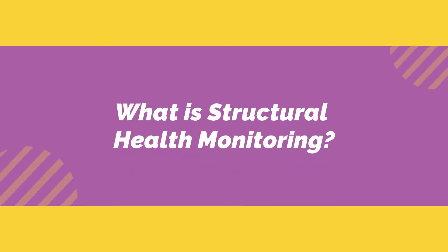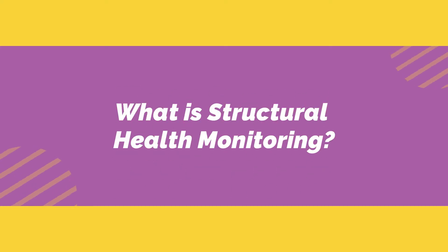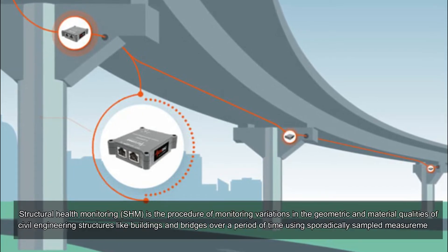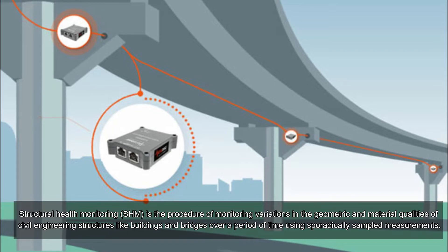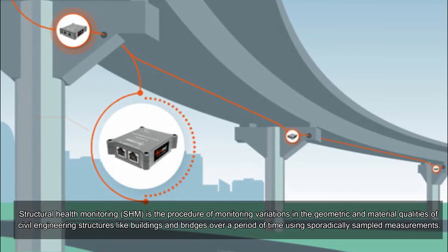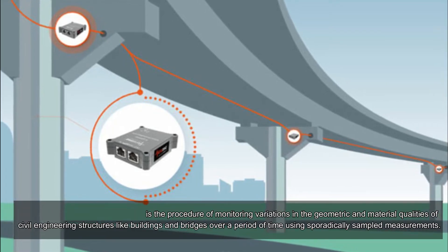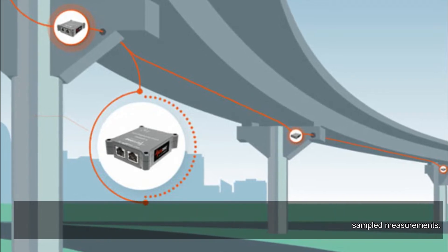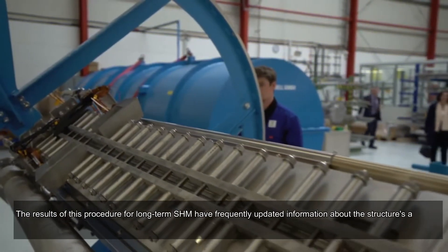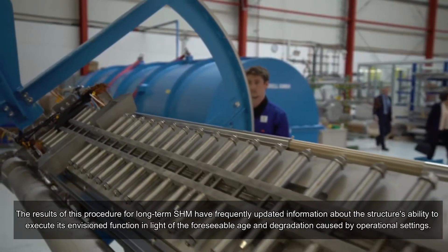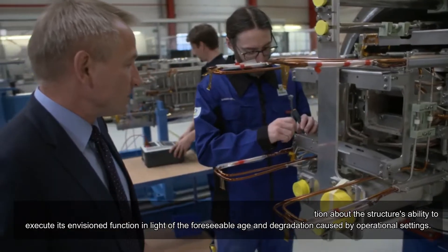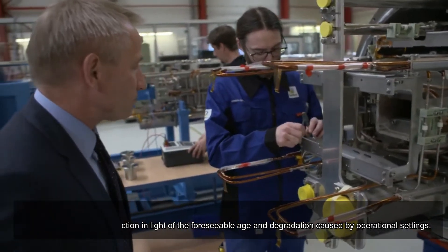What is Structural Health Monitoring? Structural Health Monitoring, SHM, is the procedure of monitoring variations in the geometric and material qualities of civil engineering structures like buildings and bridges over a period of time using sporadically sampled measurements. The results of this procedure for long-term SHM have frequently updated information about the structure's ability to execute its envisioned function in light of the foreseeable age and degradation caused by operational settings.